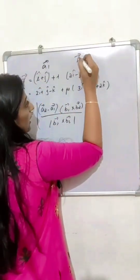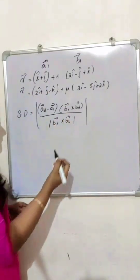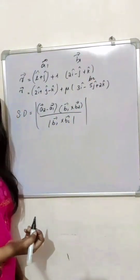B1 vector is 2i minus j plus k, and a2 vector is 2i plus j minus k.